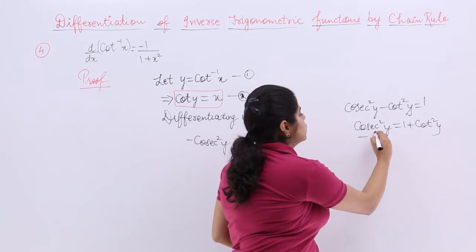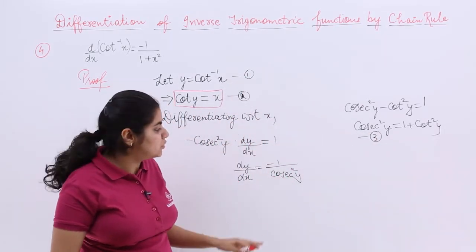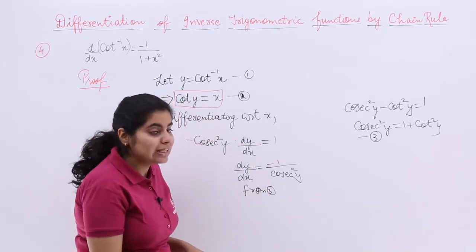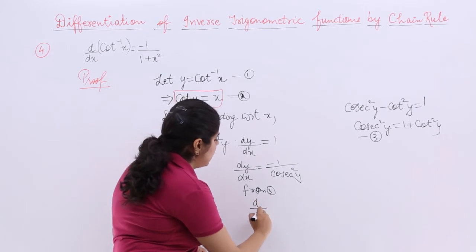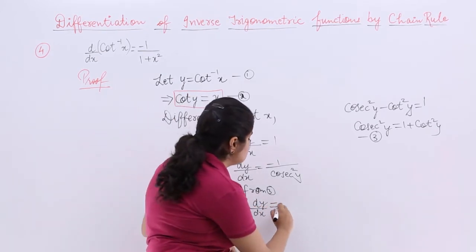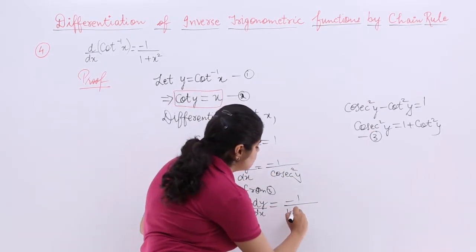So let's name this as equation number 3. And when we have 1 and 2, after that we have 3. So I write here from 3. From 3, my dy/dx is equal to minus 1 upon cosecant square y is 1 plus cot square y.